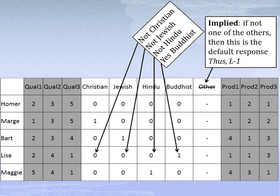So, we've given a survey to the Simpson family. One of the questions asked about religion. Starting from the bottom: Maggie is Hindu, Lisa is Buddhist, Bart is Jewish, Marge is Christian, and Homer — because he is not one of the other four religions — is by default, other. Thus, we don't need to include this last category in our dataset. Dummy variables are a slightly more complex concept; we'll discuss them in more detail in future lectures.